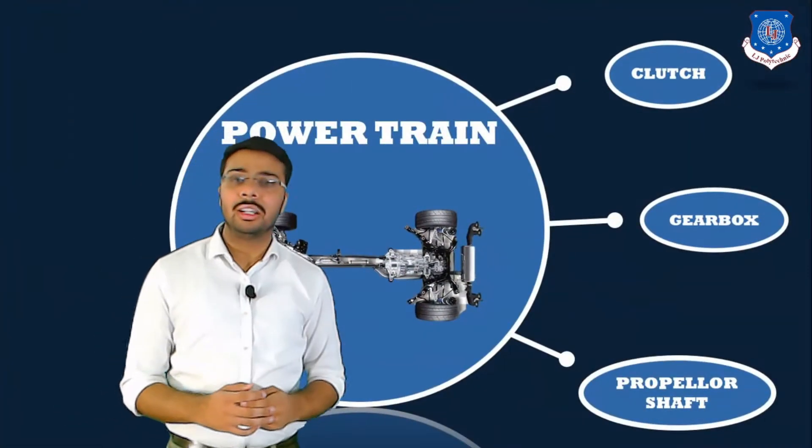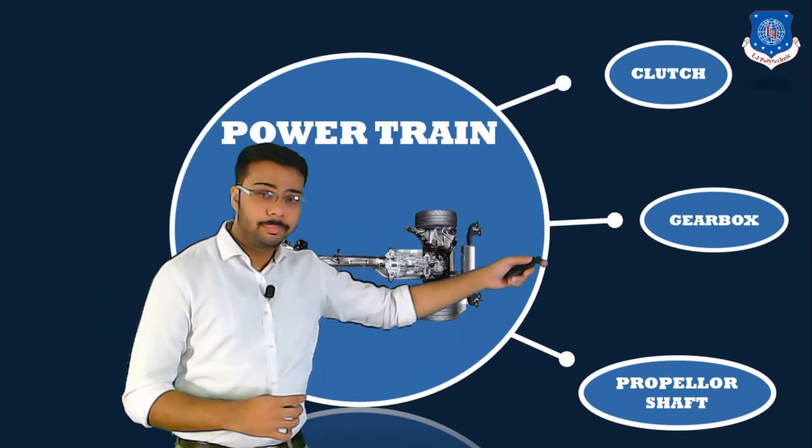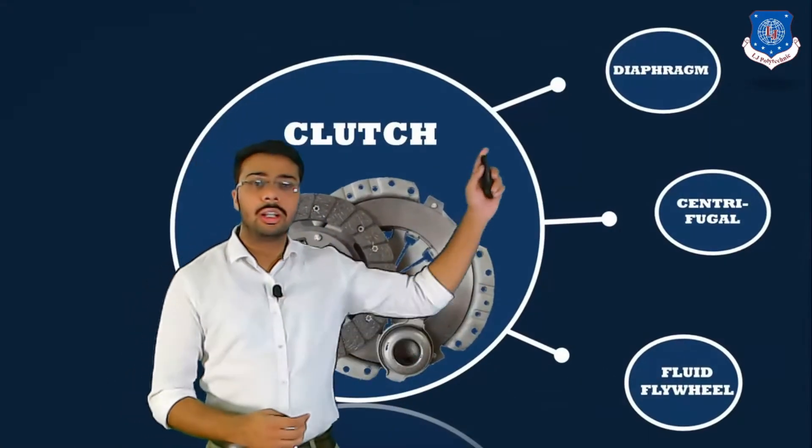The powertrain, as I said earlier, consists of various systems and subsystems like clutch, gearbox, and propeller shaft along with universal joint. Today we are going to focus on clutch.